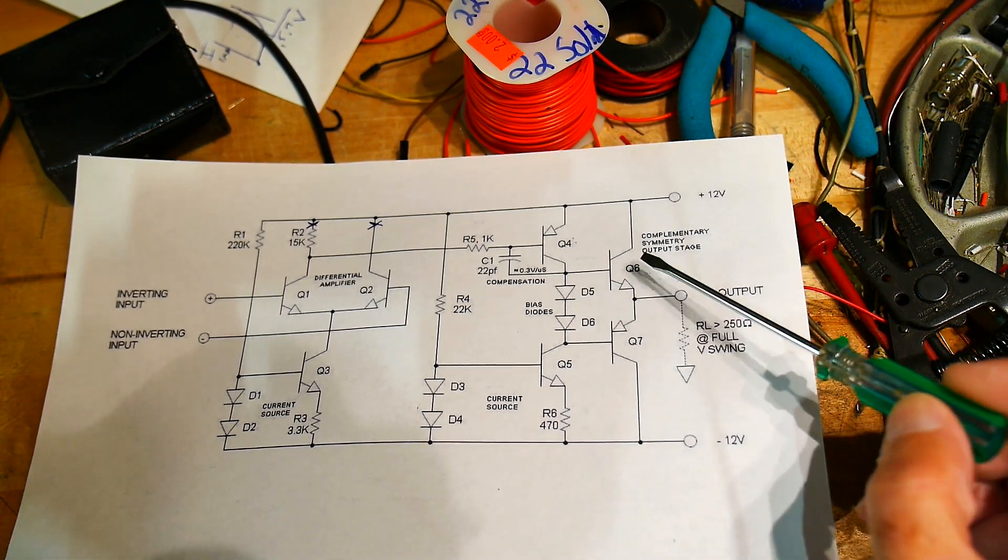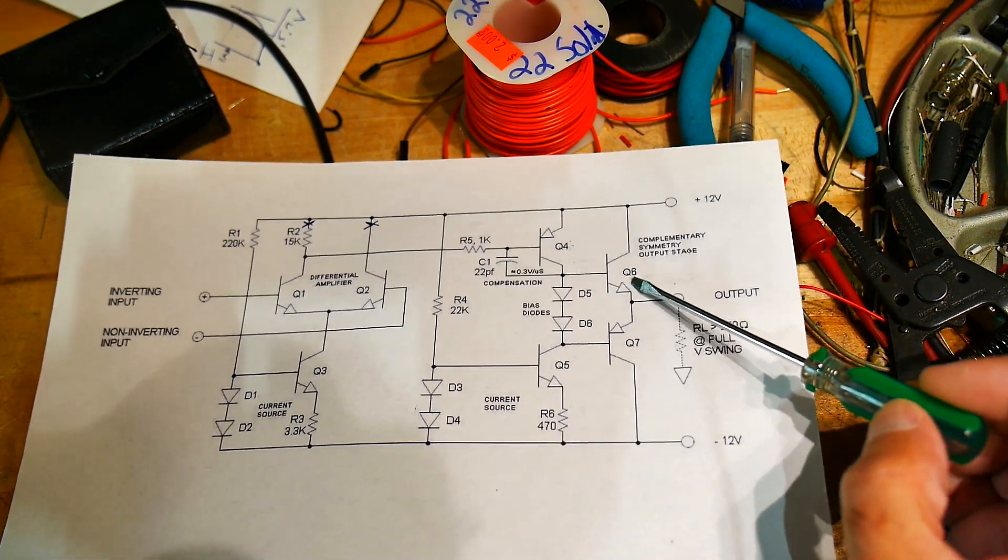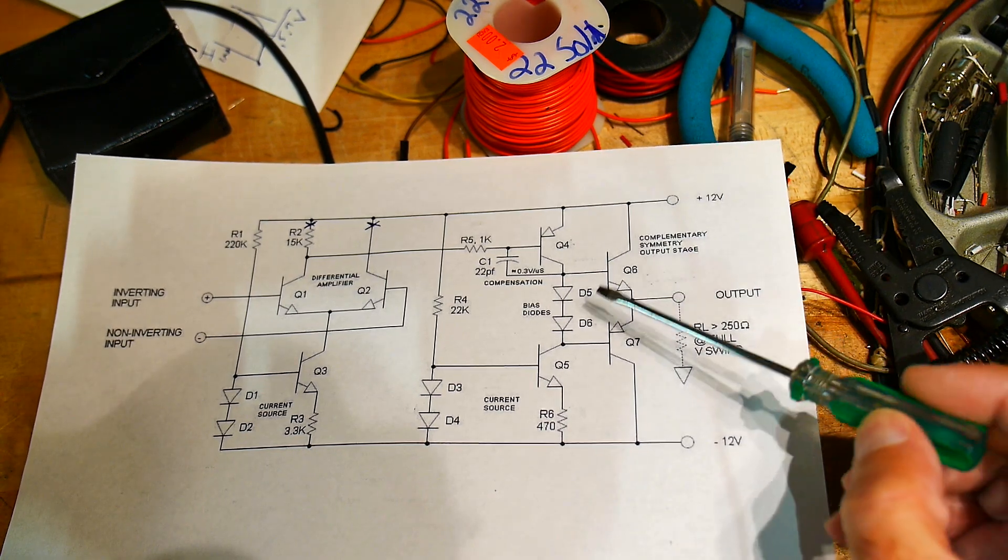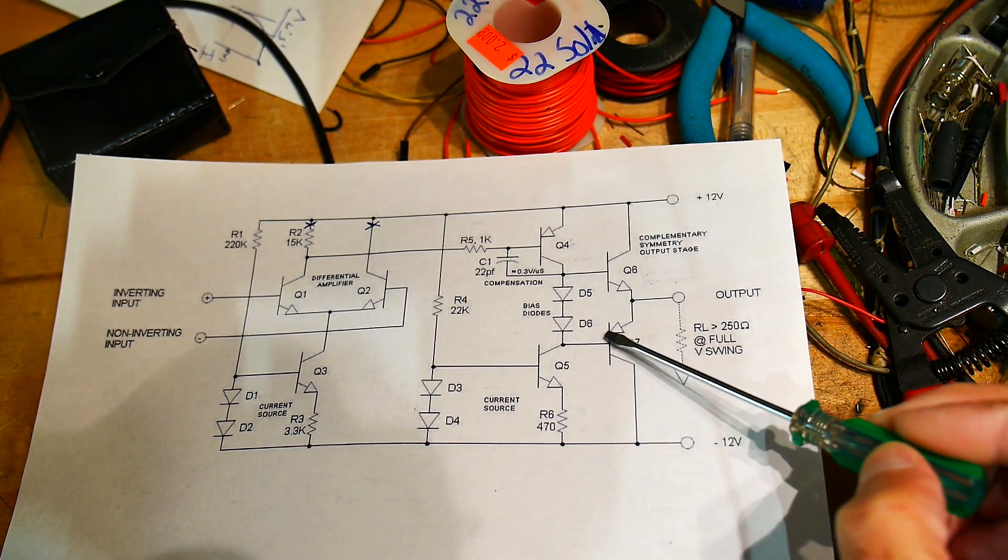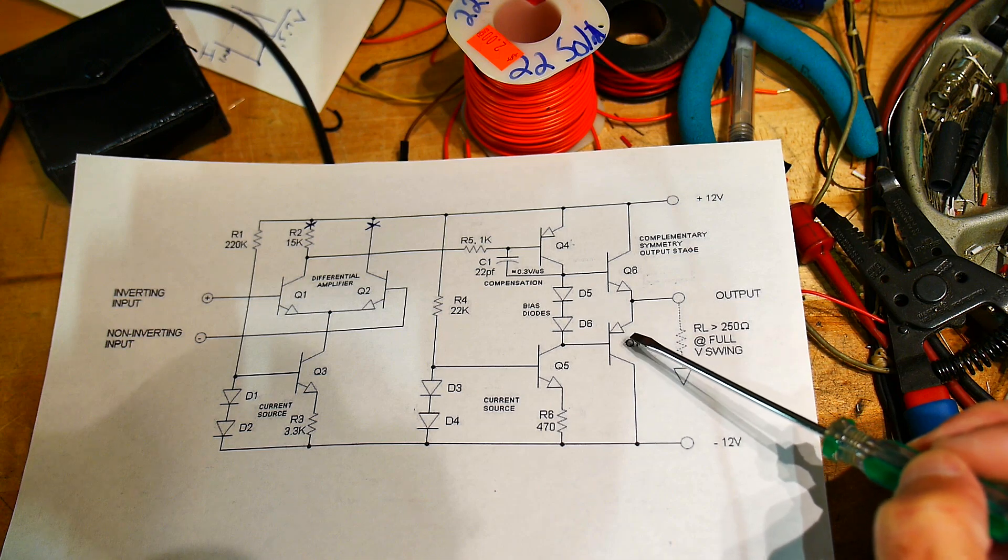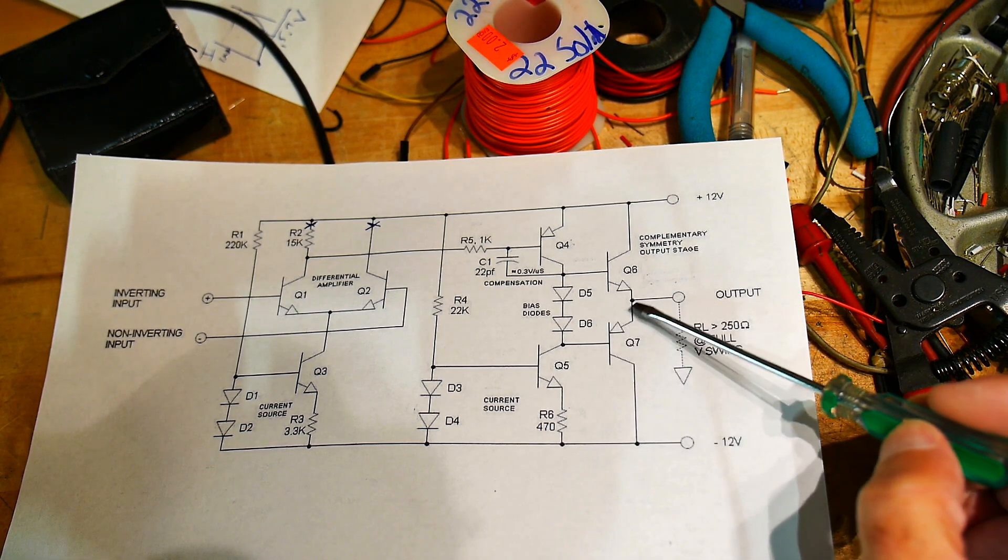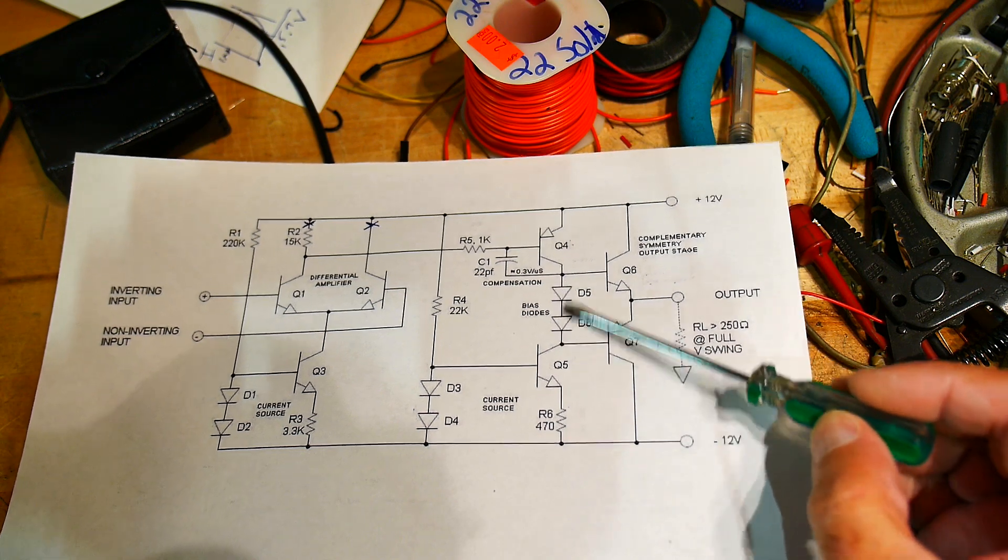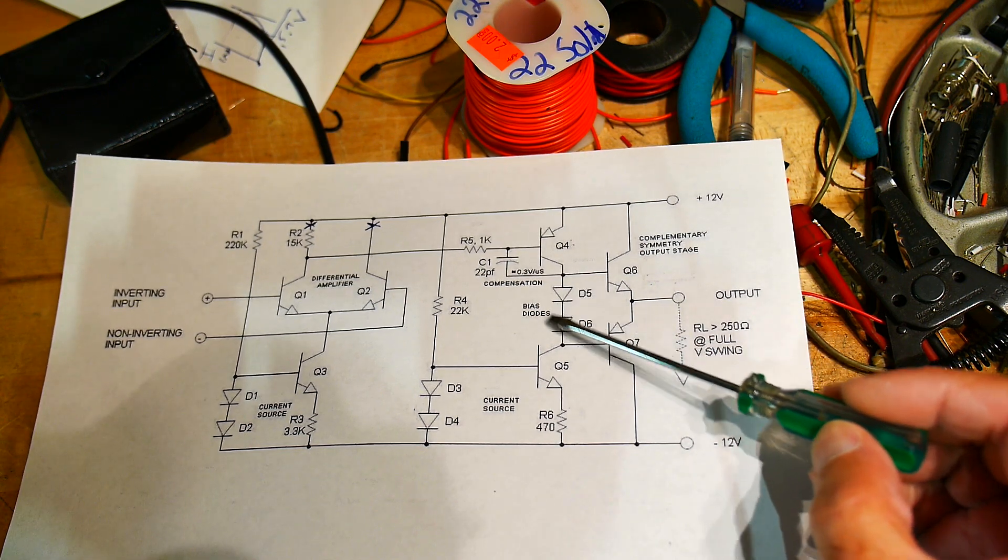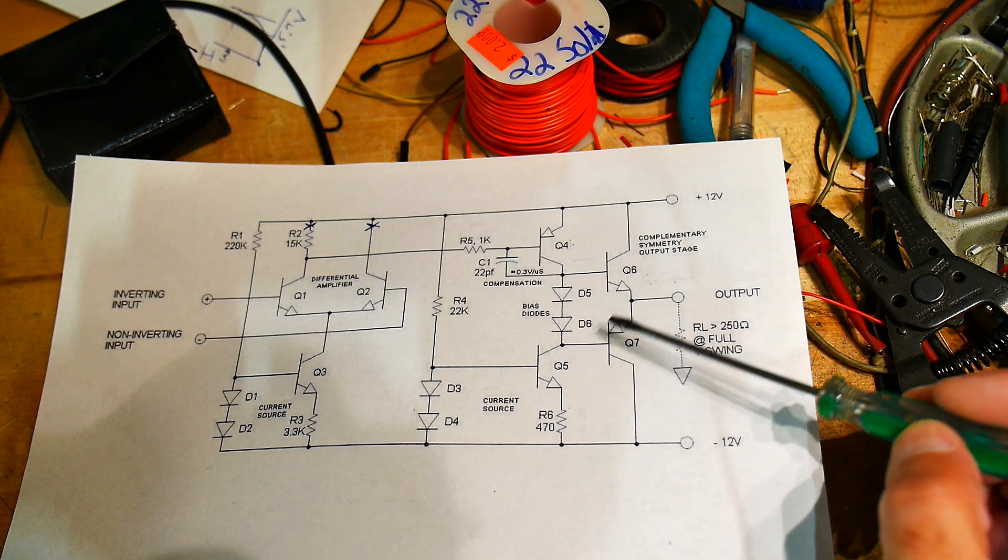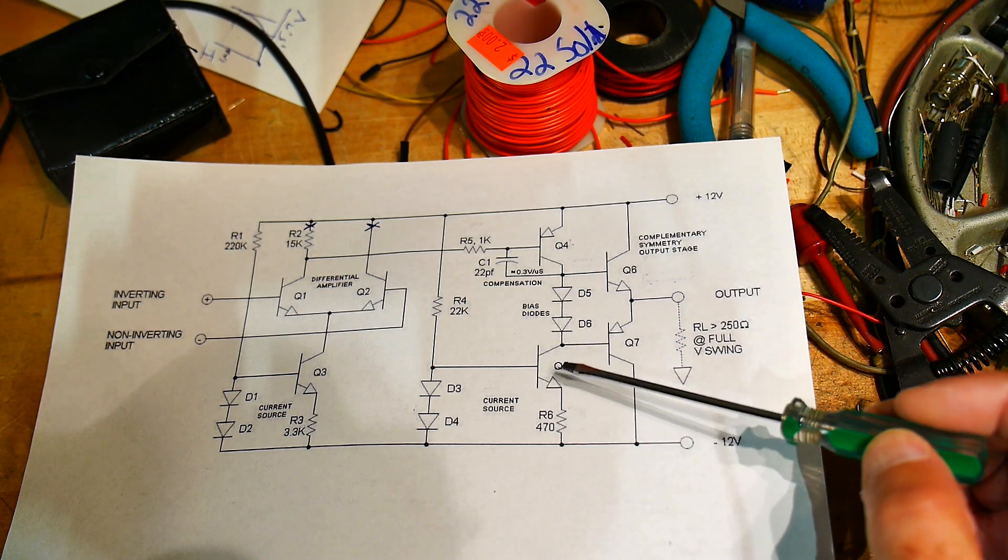This diode takes care of the VBE drop of Q6, and this diode takes care of the VBE drop of Q7, so that when this transitions through zero, you don't have a break in the waveform. It takes care of that distortion.